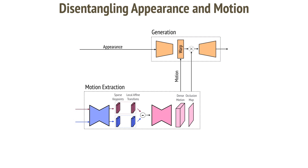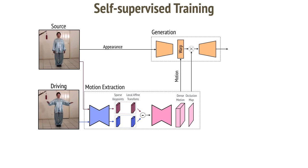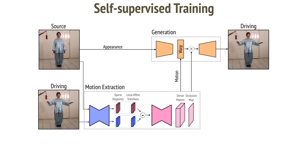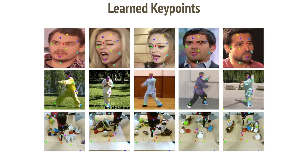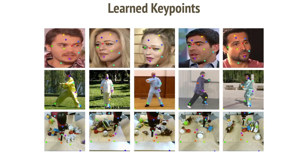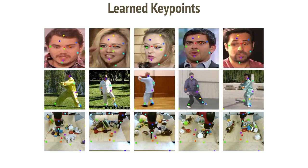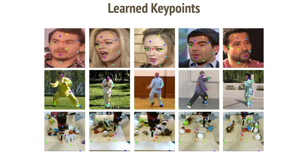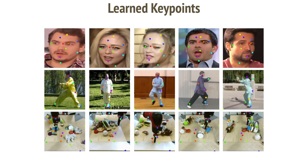During testing, the frames from the driving video are used as both the source and the target. In this manner, the whole framework does not require any labels or landmarks. The model learns a distinct set of keypoints for each object. The keypoints have semantic meaning and are spatially and temporally consistent. We show that these keypoints are sufficient to define complex motions for image animation.